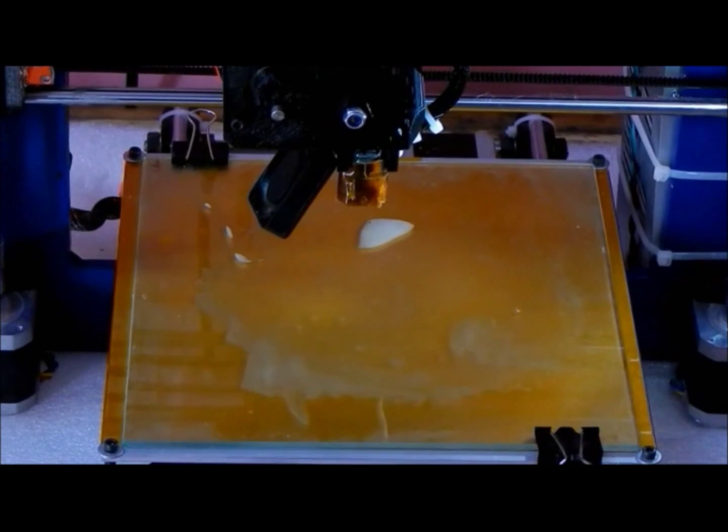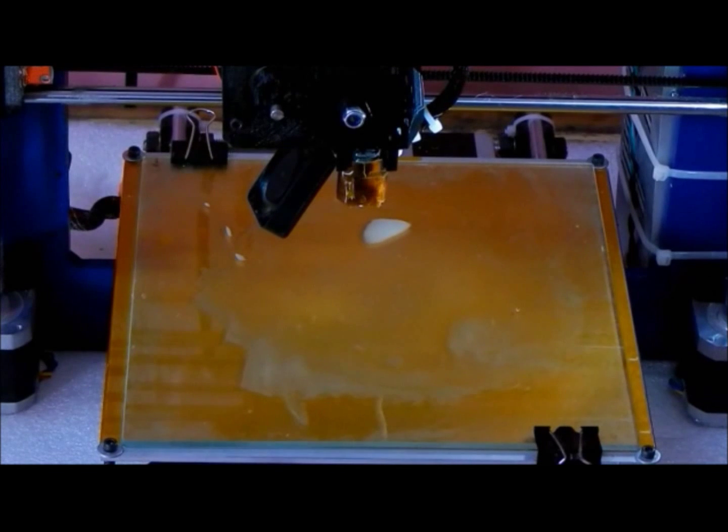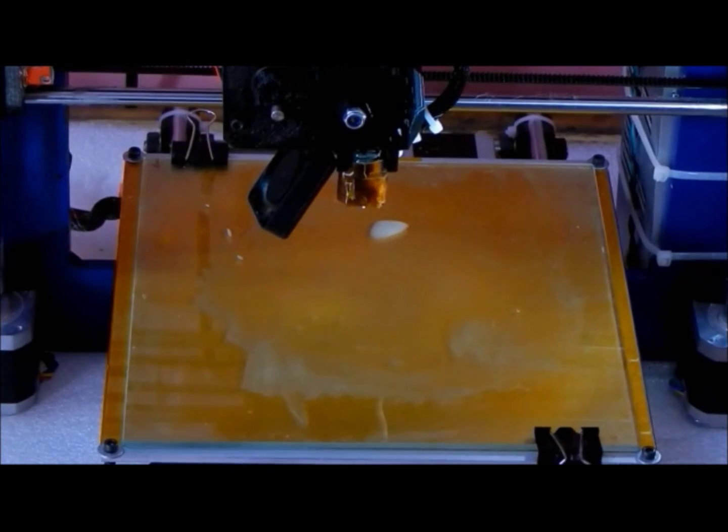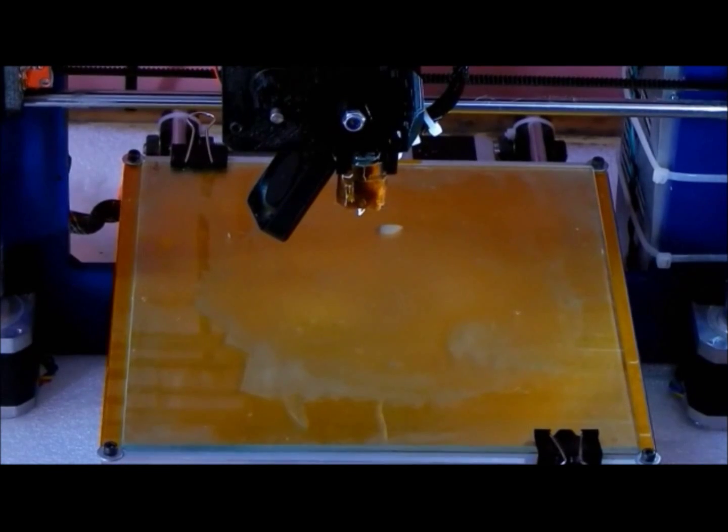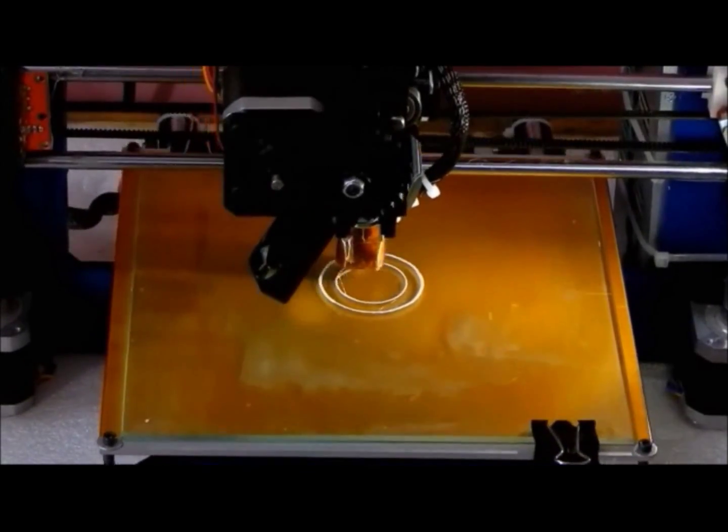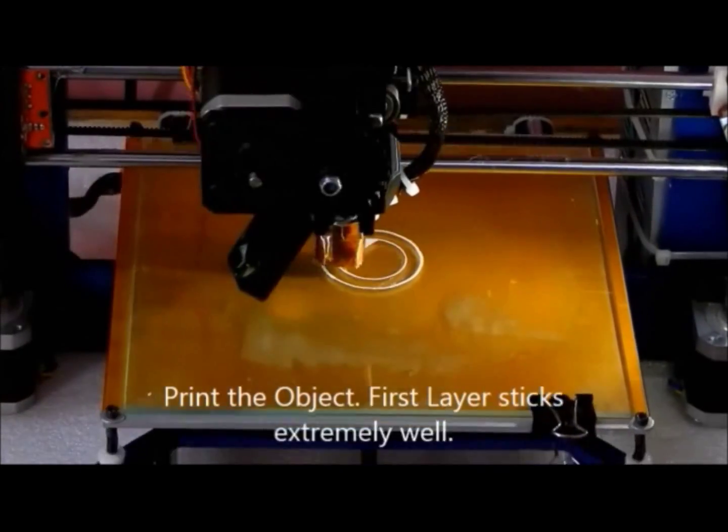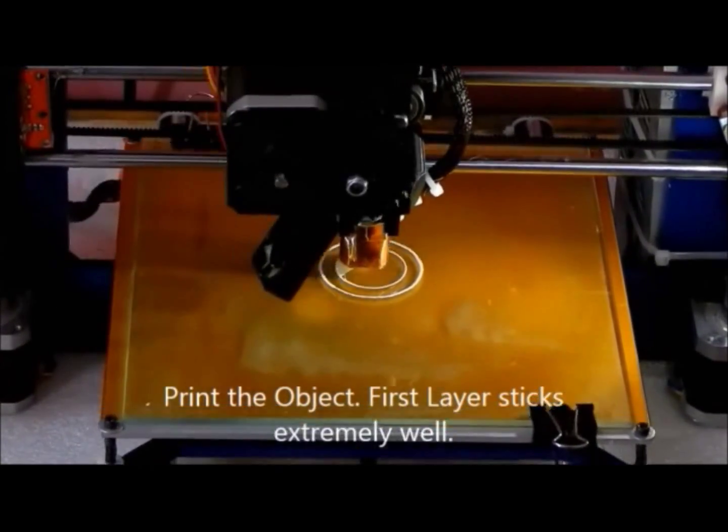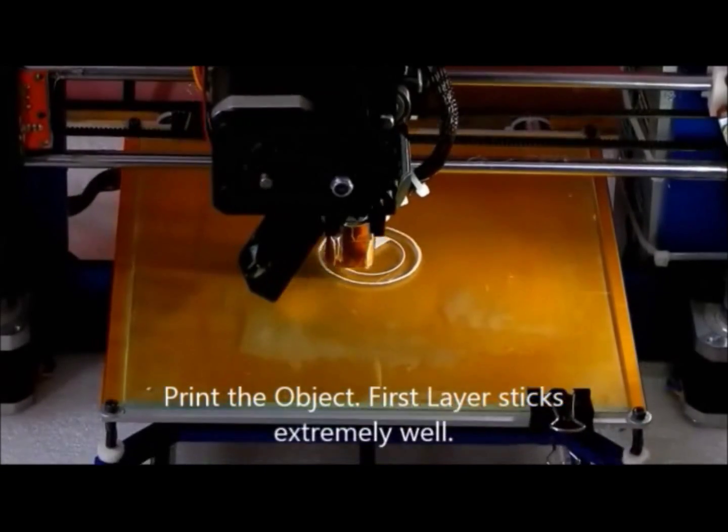Once the water dries up completely, you can start printing. There you see that the first layer sticks really nicely and you don't have to worry about adhesion problems. You can also use a mixture of PLA and water instead of fevicol.